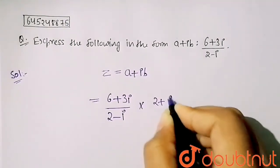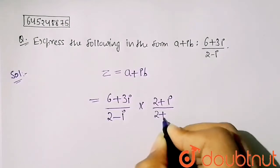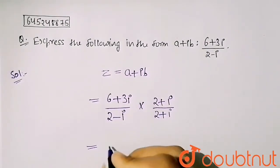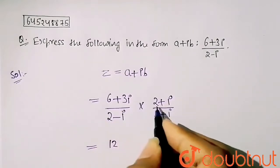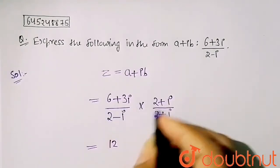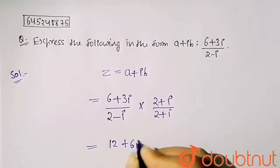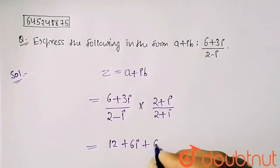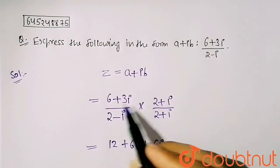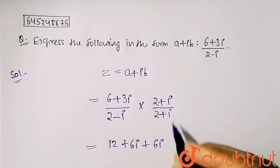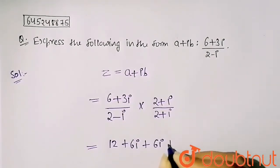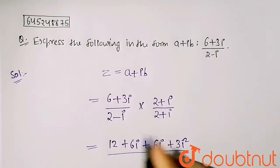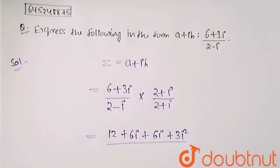Multiply these terms: 6 into 2 will be 12, plus 6 into iota will be 6 iota, plus 3 into 2 is 6 iota, plus 3 iota into iota. So this will give you 3 iota square.